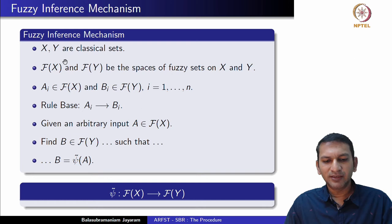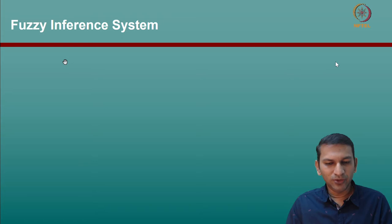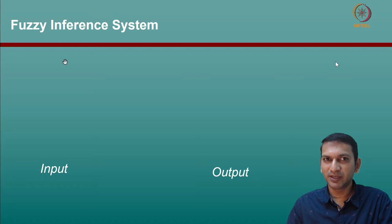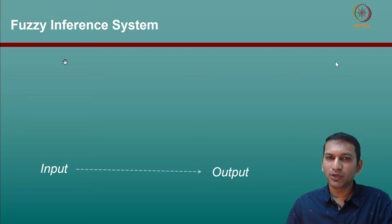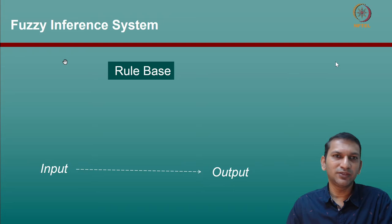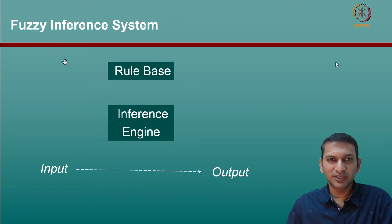A fuzzy inference mechanism can be thought of as a function from the set of fuzzy sets on X to the set of fuzzy sets on Y. We looked at a diagrammatic schema of fuzzy inference itself — what we would like to do is map a given input to output. If you remember the example of an air conditioner control system, the input is temperature and the output is fan speed. We need an inference engine, and this engine takes the help of the rule base to produce an output.